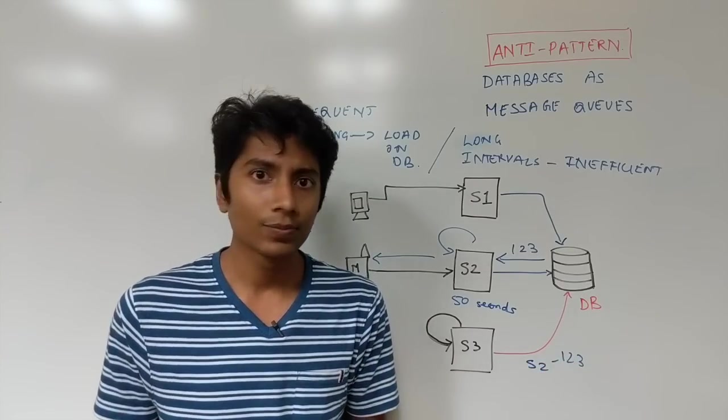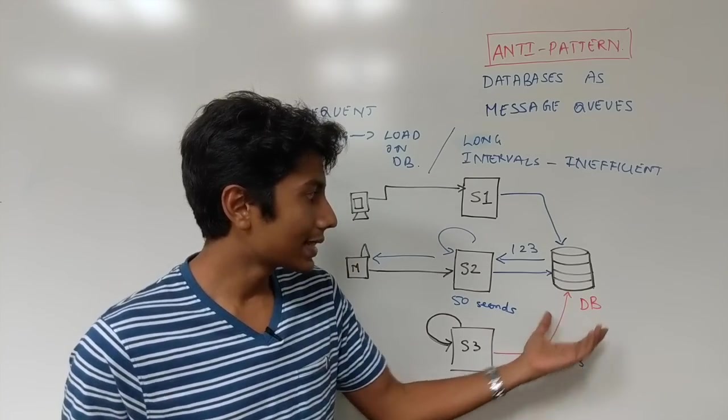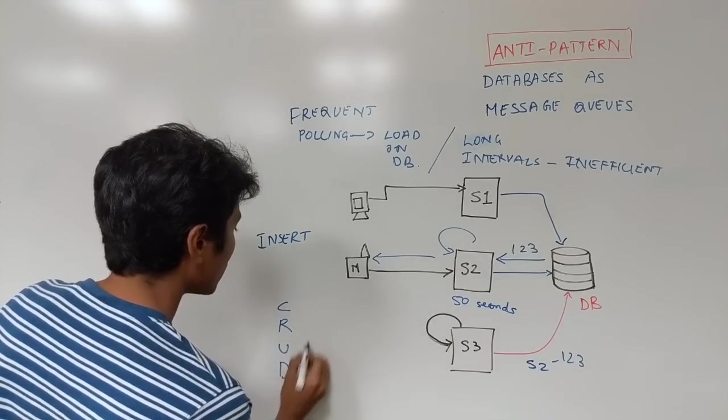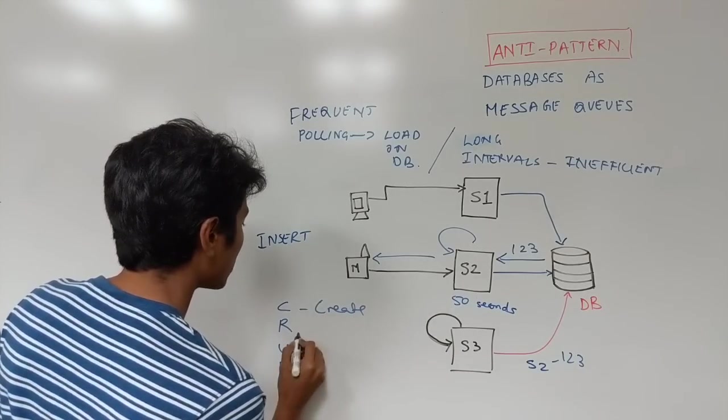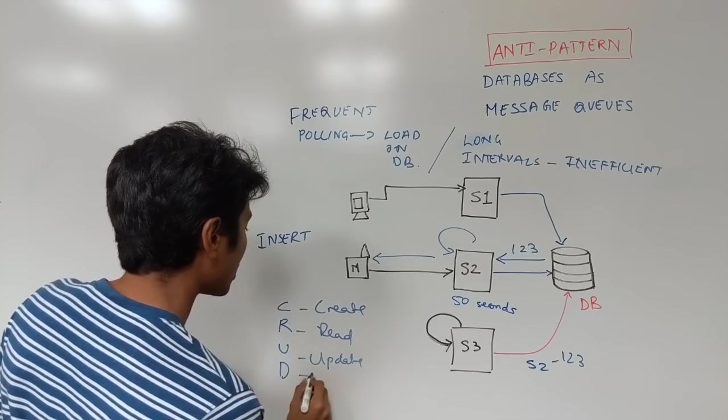Issues like locking, issues like deadlocks, so on and so forth. But just understand that if you have something like a CRUD model, which is C-R-U-D, this stands for create, this stands for read, this stands for update, and this stands for delete.